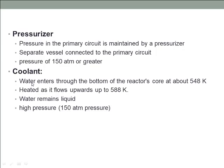The next component is the coolant. Light water is used as the primary coolant in the pressurized water reactor. Water enters through the bottom of the reactor core at about 548 Kelvin and is heated as it flows upward through the reactor core to a temperature of about 588 Kelvin. The water remains in liquid form despite the high temperature due to the high pressure of the primary coolant loop — usually 150 atmospheric pressure is maintained.